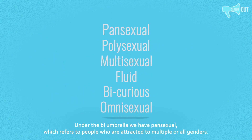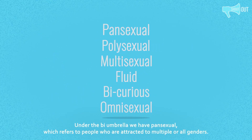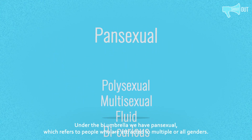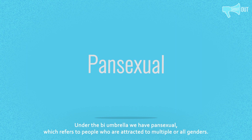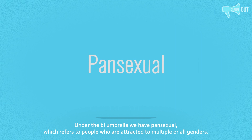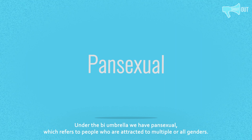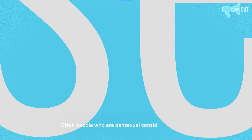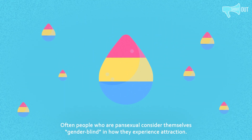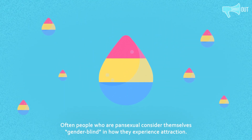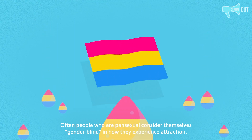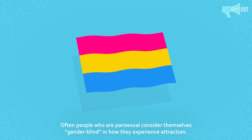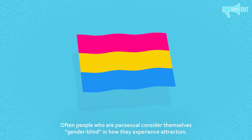Under the bi umbrella we have Pansexual, which refers to people who are attracted to multiple or all genders. Often people who are pansexual consider themselves gender-blind in how they experience attraction.